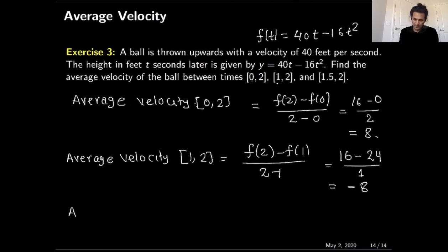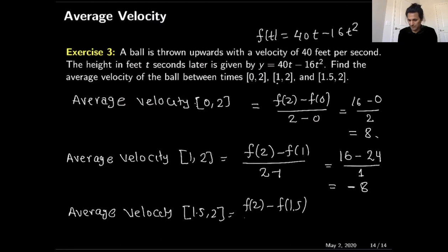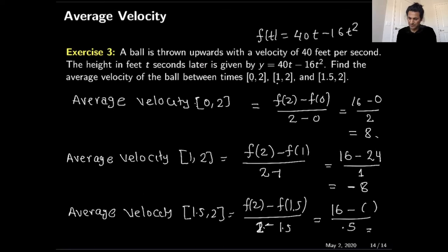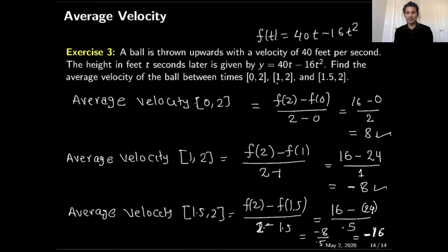Now let's calculate the last one: average velocity on the interval 1.5 to 2. This is [f(2) - f(1.5)] / (2 - 1.5). f(2) = 16; f(1.5) = 40(1.5) - 16(1.5²) = 60 - 36 = 24. So we have (16 - 24) / 0.5 = -8 / 0.5 = -16. So the average velocities are 8, -8, and -16 on these three intervals.